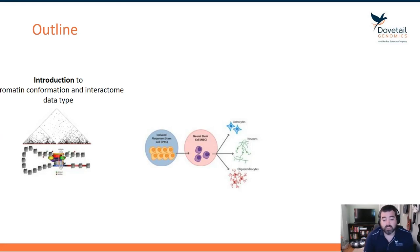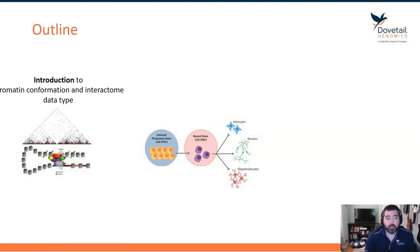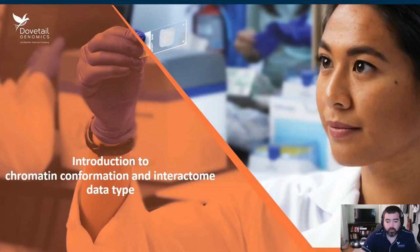We'll look at how topology plays a role in driving development into a neuronal stem cell, and we'll end on how you go about integrating these types of interactome data into your research. With that, let's get started on our introduction.